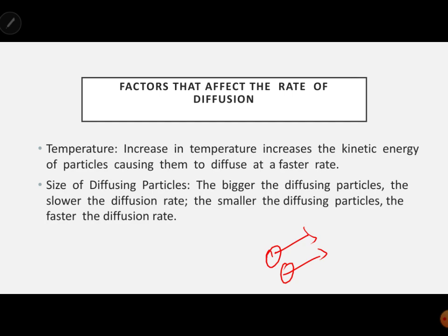The fifth factor is the size of the diffusion particles. The bigger the particle, the slower the diffusion rate. For example, throwing a 50kg stone versus a 2mg stone — the smaller one moves faster. Similarly, when particles are smaller in size, diffusion is fast; when particles are bigger, diffusion is slow.